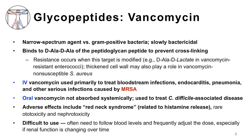Oral vancomycin is not absorbed systemically and is used to treat Clostridioides difficile-associated disease. Adverse effects include the red neck syndrome, which is related to histamine release leading to flushing of the head and neck, and rarely ototoxicity and nephrotoxicity — though these are most commonly seen when vancomycin is given with other nephrotoxic agents. Vancomycin is difficult to use in that you need to follow blood levels and frequently adjust the dose, especially if renal function is changing or worsening over the course of therapy.